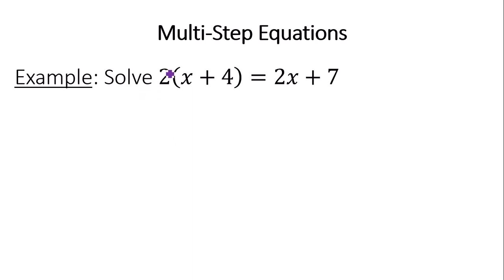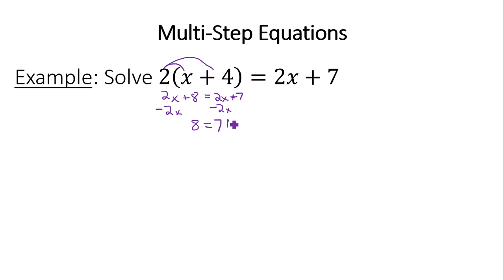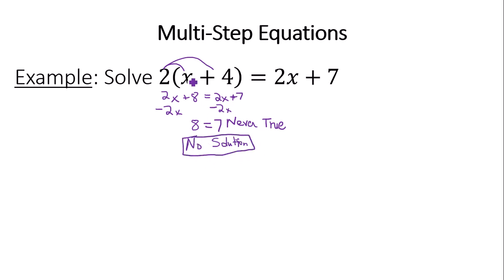Next equation. Start by distributing: you get 2x, and 2 times 4 is plus 8, equal to 2x plus 7. You have variable terms on both sides, so subtract 2x from both sides. You end up with 8 equals 7, which is never true. When you get a statement that is never true — such as 8 equals 7 — the answer is no solution. No value of x will satisfy this equation.